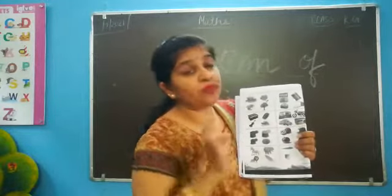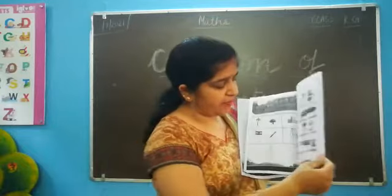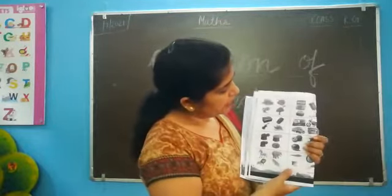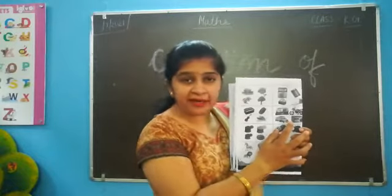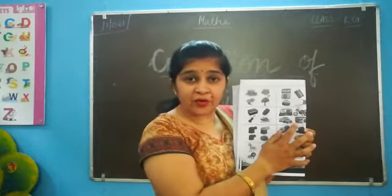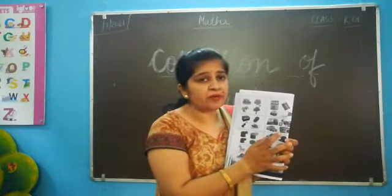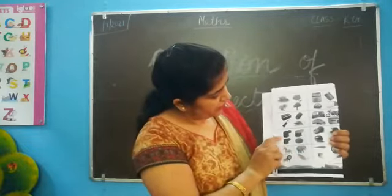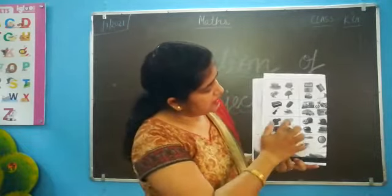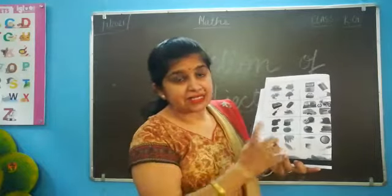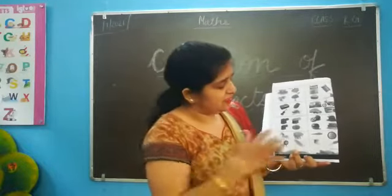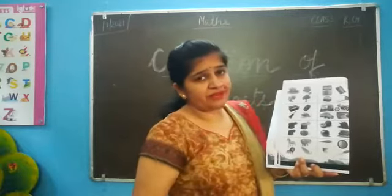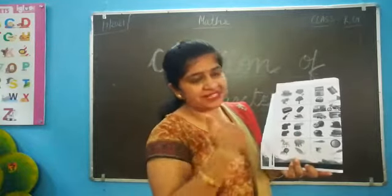There is a collection of vehicles — jaisa ki humne yahan dekha tha, collection of vehicles. But in the collection of vehicles, yee kya aa gaya? Radio. Radio is not a part of collection of vehicles, then cross this. Now, this is a collection of food grains. Pumpkin kaise aa gaya beech mein? Cut this pumpkin.